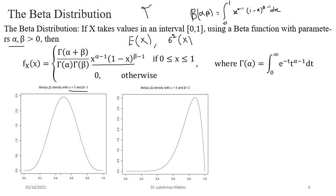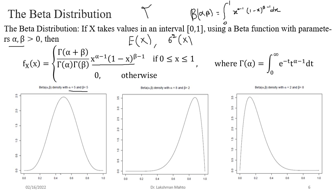If you take alpha = 8 and beta = 2, you see left skewness in the PDF — the PDF is asymmetric. Asymmetric values of alpha and beta produce a skewed PDF. Similarly, if you take alpha = 2 and beta = 8, you get right skewness — an asymmetric PDF in the other direction. So various combinations of alpha and beta give different kinds of PDF for the beta distribution.